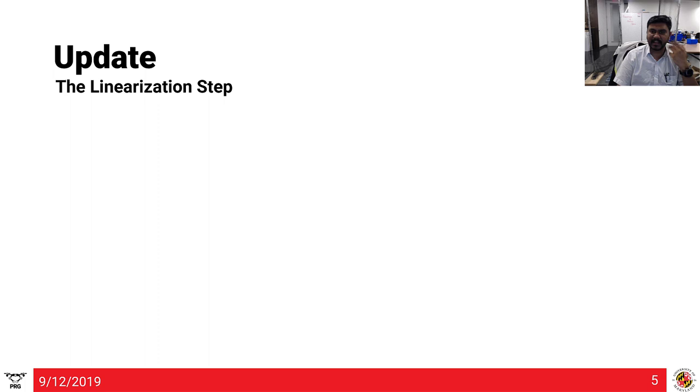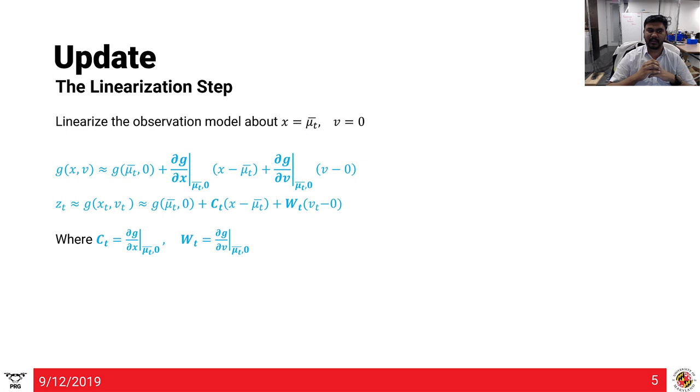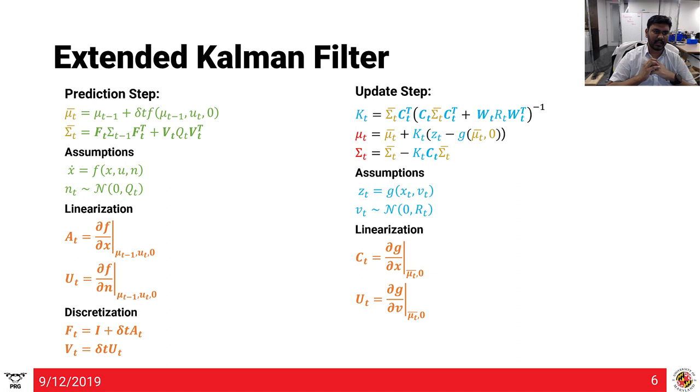Next, for the update step, we also have another linearization step because that's also non-linear. Again, we linearize the observation model about my predicted state mu and zero noise. That is shown here using simple calculus tricks like first order Taylor approximation, giving names for the partial derivatives as capital C and capital W.